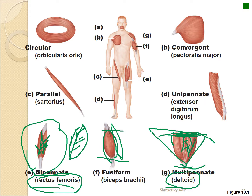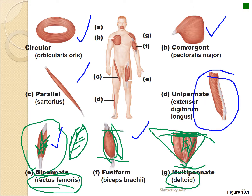The key fascicle arrangement types to know are: circular, convergent, bipennate, fusiform, and parallel. You don't need to be tested on unipennate and multipennate specifically, though you should still recognize those muscles. These terms are very important for understanding the muscle.